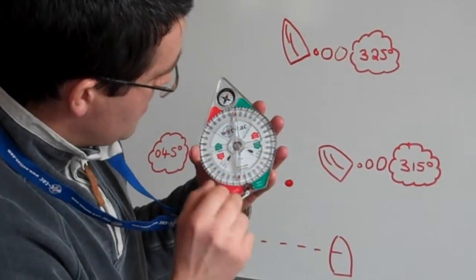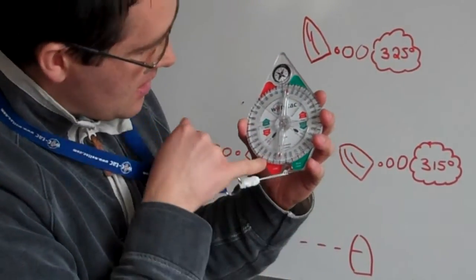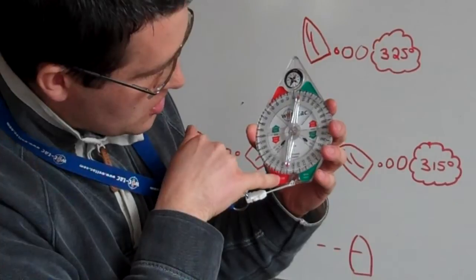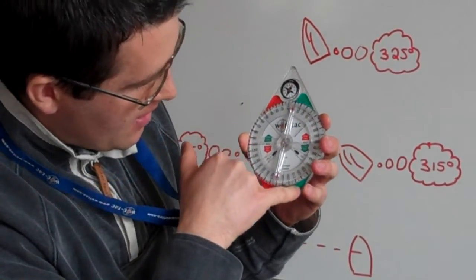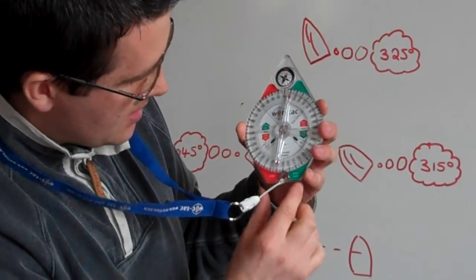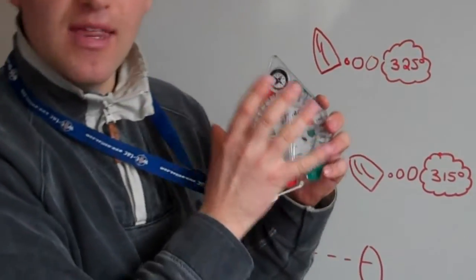So I've dialed my 325 on the tacking line here without moving the pointer or anything. The important thing to do now is to look where the bottom of the pointer lies on which side. We've got jibe on this side and bear away on this side of the Wattac. And the pointer now is pointing in the jibe section.